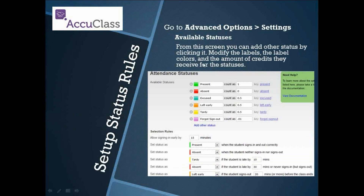As you can see here, we're going to go ahead and set up our status rules. In the top part, we have attendance statuses where it basically gives you a few that we've already pre-thought out — present, absent, excused, left early, tardy. These can all be changed in terms of their wording. Whether it counts as full credit in percentage — so 1 is 100%, 0.5 would be like half credit — these can be removed, and you can add other statuses as well.